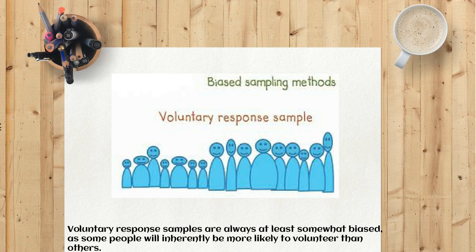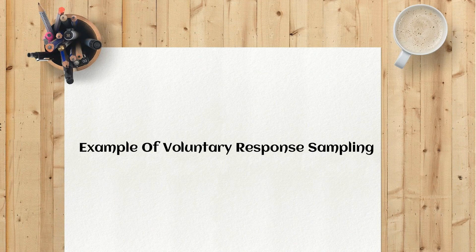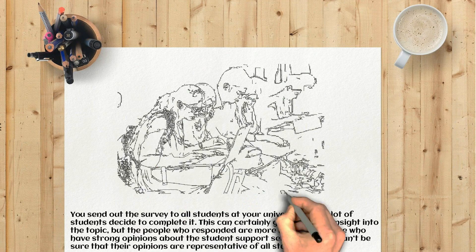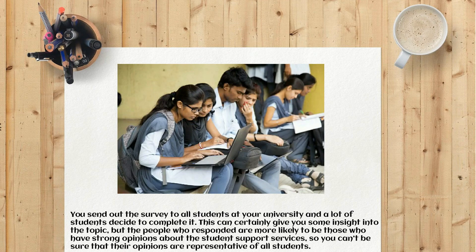Example of voluntary response sampling: you send out a survey to all students at your university and a lot of students decide to complete it. This can certainly give you some insight into the topic, but the people who responded are more likely to be those who have strong opinions about the student support services. So you can't be sure that their opinions are representative of all students.